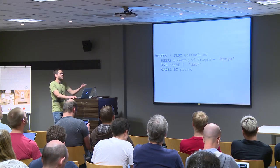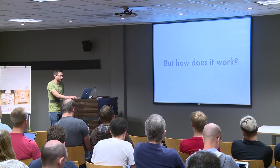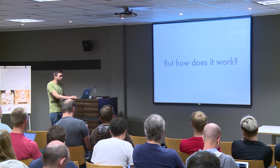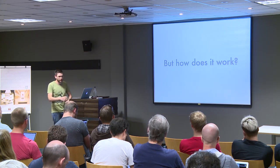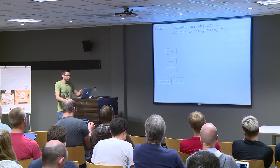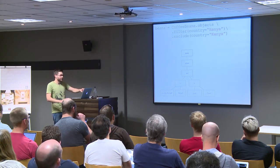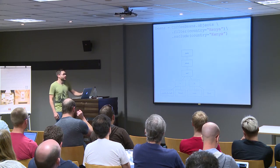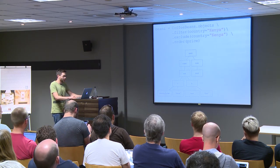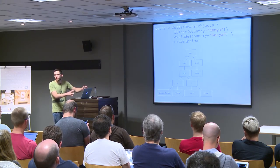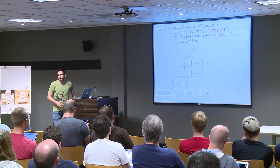Internally, Django's ORM builds up expression trees for these chained models that get combined to get a final result. For example, the first one has a query operator and a where operator where country of origin equals Kenya. When we add more to it, there's another operator for country of origin not equal to dark roast. When we order it, it changes the expression tree and finally builds up the SQL query.